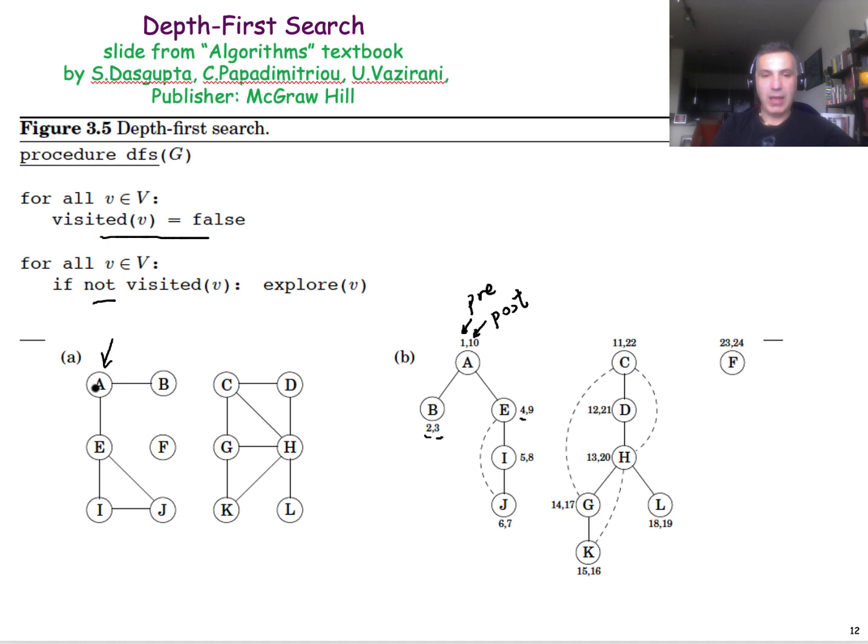So after you call the explore function with node A, you would have to call the explore function here again for some other node that has not been visited. In this example, we call the function explore on node C. That's why it gets the timestamp 11, which is one more than the post-timestamp of 10. And so we explore all of these nodes, this connected component. And finally, the last node that we have to call explore on is the node F.